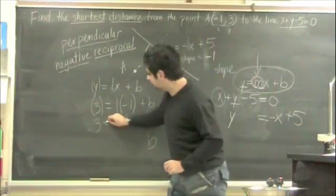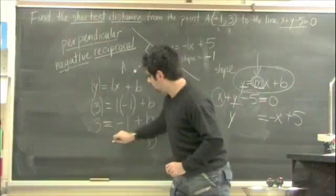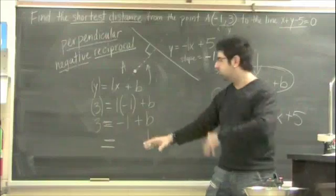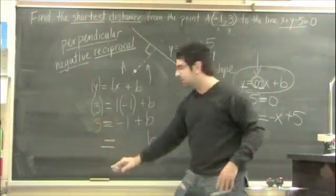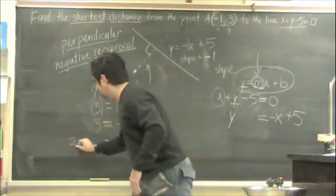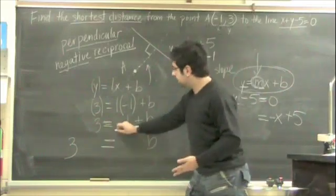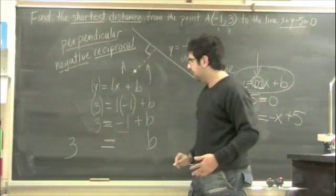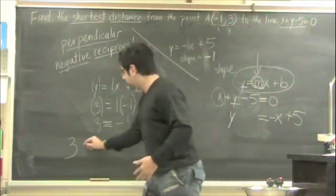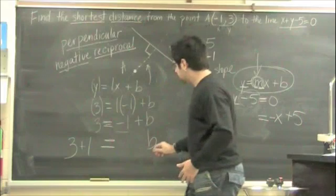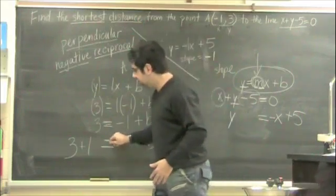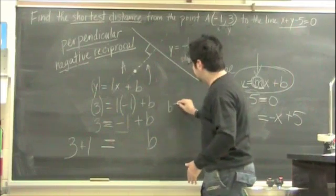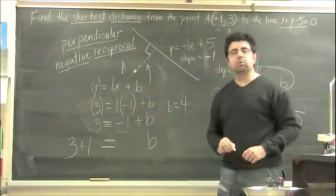Keep B on one side of the equal sign and we're going to keep everything else on the other side. So 3 is already on that side, so we don't need to change anything. But because this negative 1 is on this side of the equal sign, we want to bring it over to the other side, so it becomes positive 1. So our B value is equal to 3 plus 1, so our B value is equal to 4.